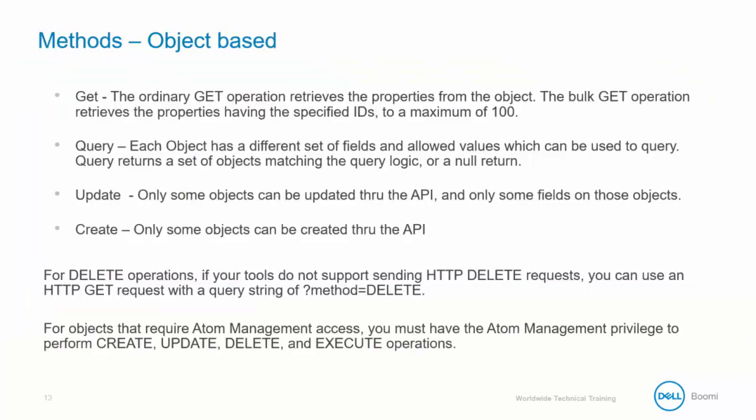Each object has some allowable operations or methods. The get method retrieves the properties from the object. The bulk get operation retrieves properties for specified IDs, to a maximum of 100. You can query for a set of fields and allowed values — query returns a set of objects matching the query logic, or a null return. Update and create are only available on some objects. For delete operations, if your tools do not support sending HTTP delete requests, you can use HTTP get with a query string of method equals delete.